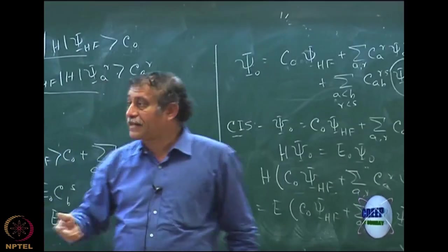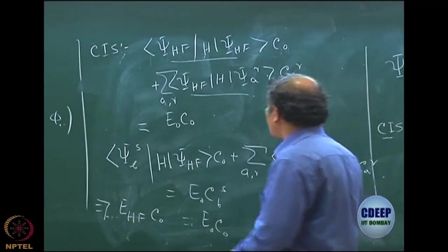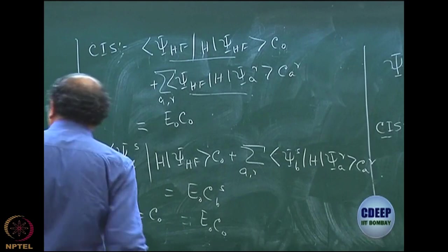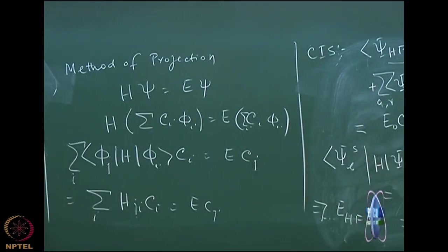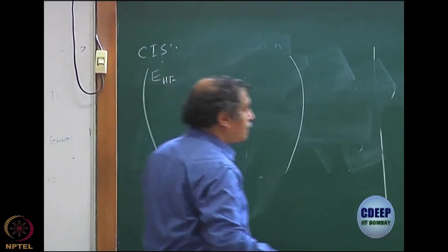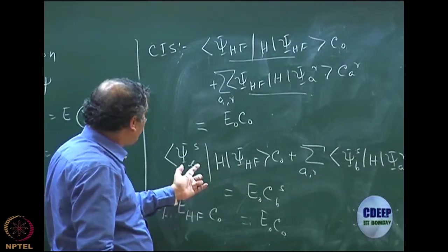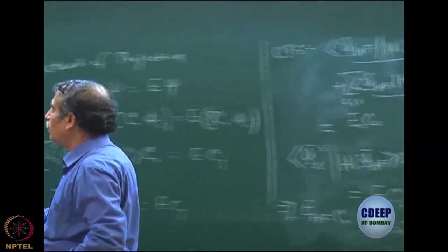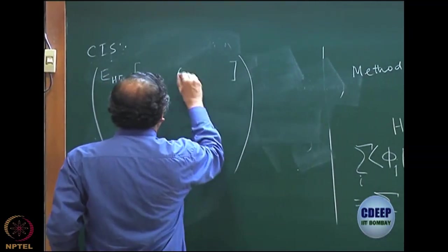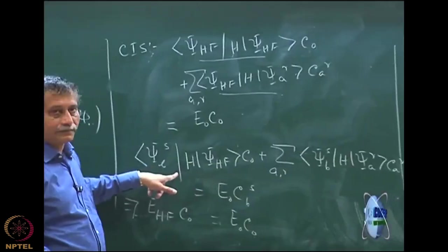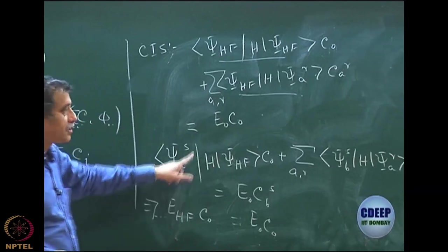But what about the other states? Since it is an eigenvalue problem, I can get excited states from the second equation. I can show this via the matrix structure. The Hamiltonian matrix for CIS looks like: the first entry is E_HF; the rest of the first row (HF to singly excited) is all 0 because of Brillouin's theorem; the first column (singly excited to HF) is also all 0, as the complex conjugate. So this matrix has a block diagonal structure. The first row and column of psi_HF are decoupled from the rest. Note: this is the row/column of psi_HF, and these are all psi_AR.